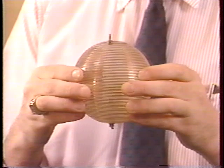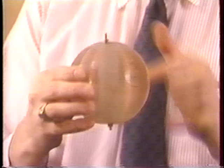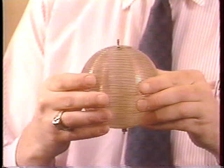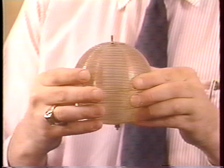This is a coil wound on the surface of a sphere. Here are the terminals. A current through the wire results in a magnetic field inside the sphere that is uniform. Outside, the field is that of a dipole.